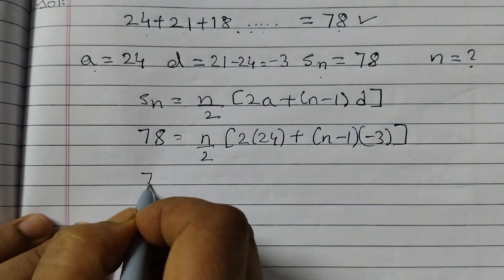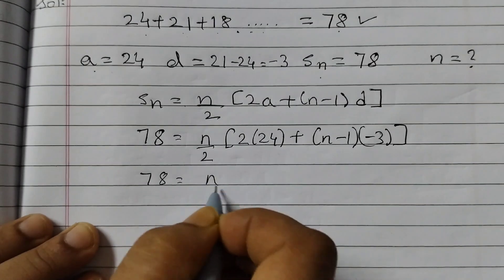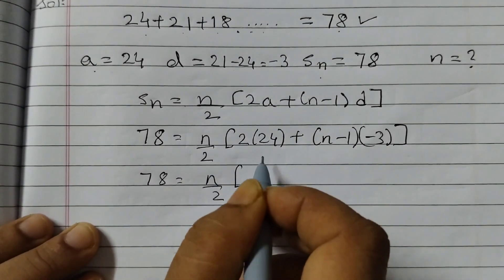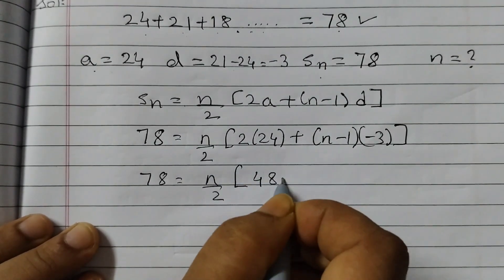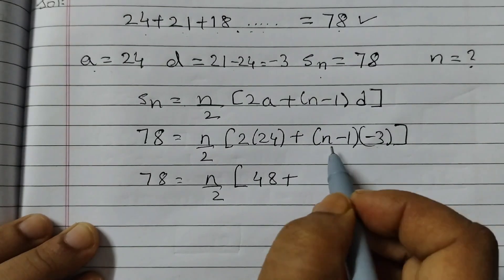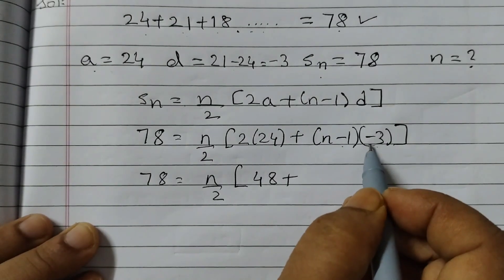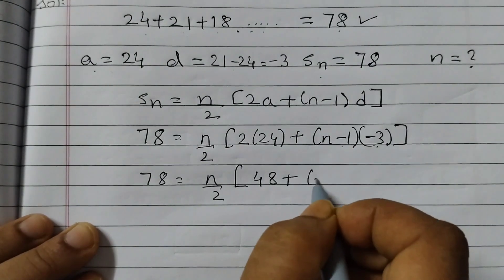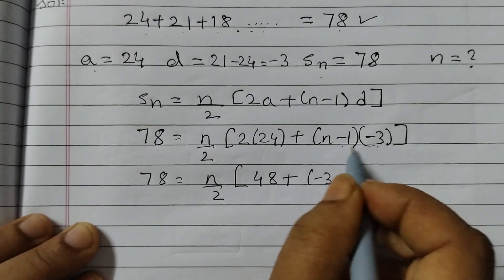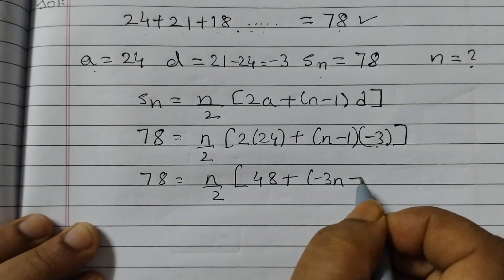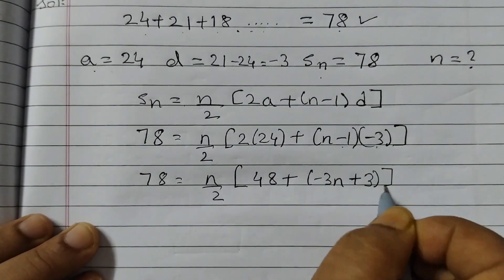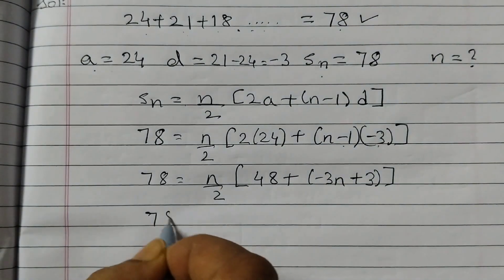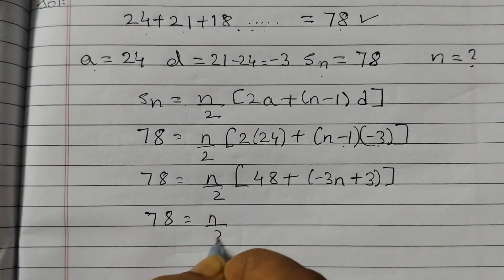Simplify this. 78 is equal to n by 2, 2 into 24 is 48 plus multiply minus 3 to n and minus 1. So minus 3 into n is minus 3n, minus minus becomes plus so this is plus 3.